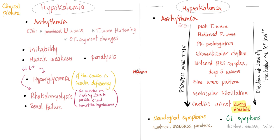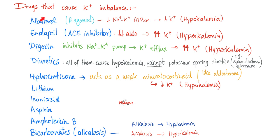Abnormal excitation can happen to other muscles, not just the heart: muscle weakness, paralysis, irritability. When potassium is too low in the blood, cells start to sacrifice themselves to bring potassium from inside to the outside, which can lead to rhabdomyolysis.